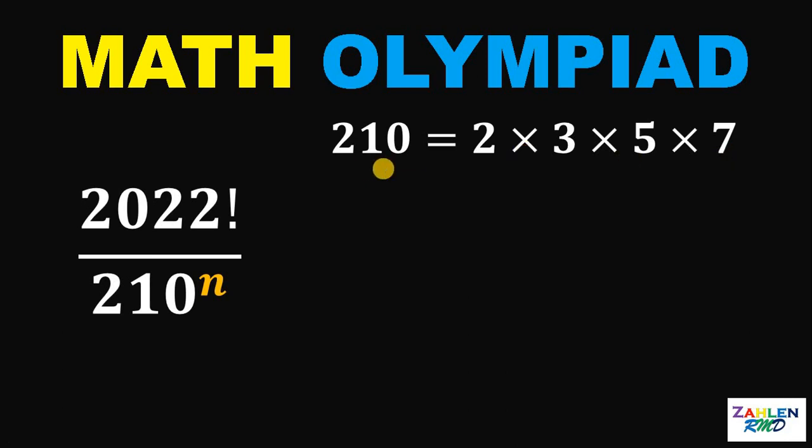At this point, we will use what we call the Legendre's formula. And the question is, what is the Legendre's formula? In mathematics, the Legendre's formula gives an expression for the exponent of the largest power of a prime p that divides the factorial n. It is named after Adrien-Marie Legendre.